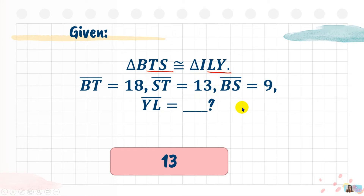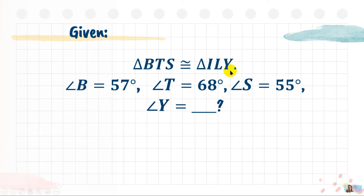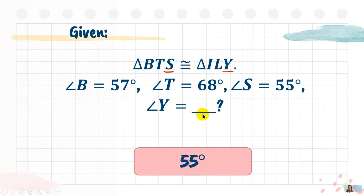For the last item of the Easy Round, triangle BTS is congruent to triangle ILY. Angle B is 57 degrees, angle T is 68 degrees, and angle S is 55 degrees. What will be the measurement of angle Y? By looking at the congruence statement, we can determine the corresponding congruent parts. Angle Y is congruent to angle S. The measurement of angle S is 55 degrees, so the answer is 55 degrees.